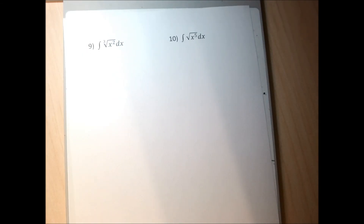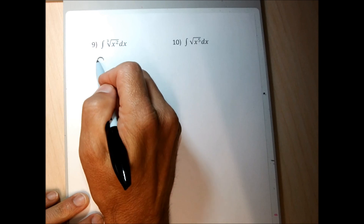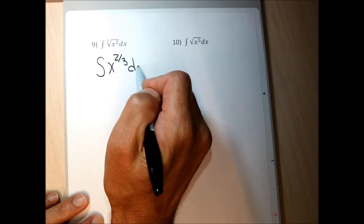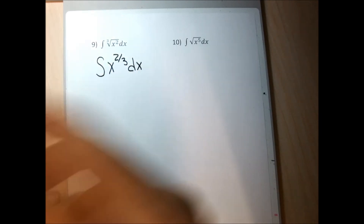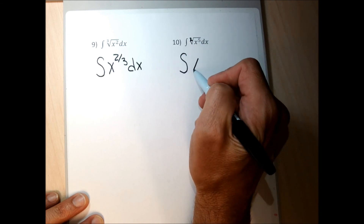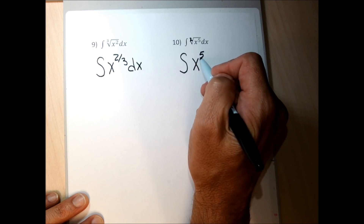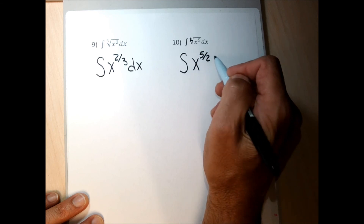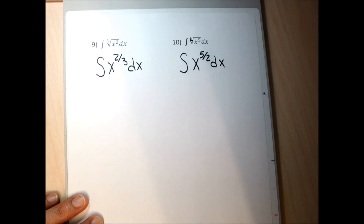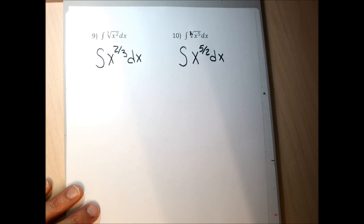For problems 9 and 10, we need to rewrite using fraction exponents to be able to add 1 to the exponent and divide by the new exponent. Problem 9 will be written as x to the 2/3 dx. For problem 10, which has a square root, there's an implied index of 2. To get rid of the radical, take the exponent under the radical and divide it by the index 2. So both problems are rewritten without the radical.